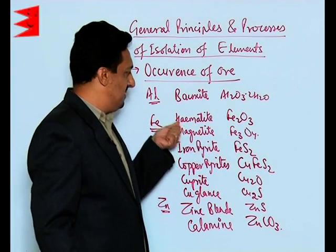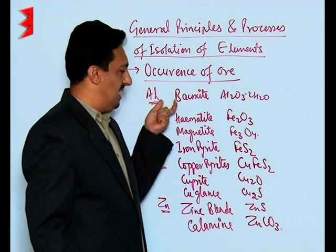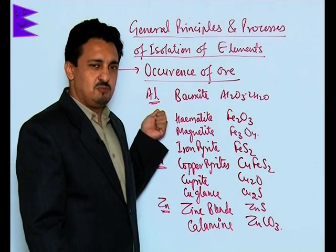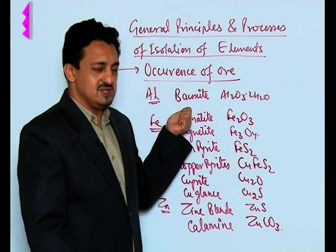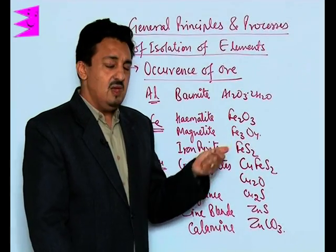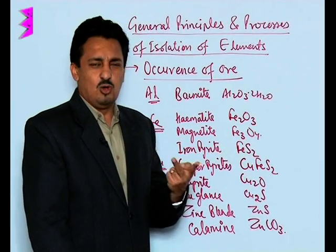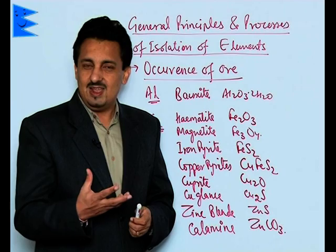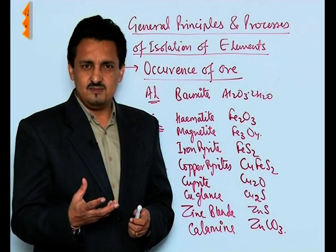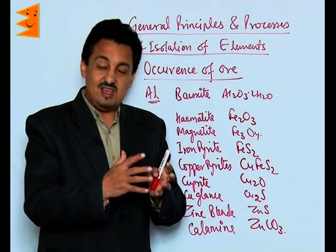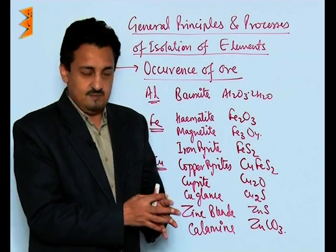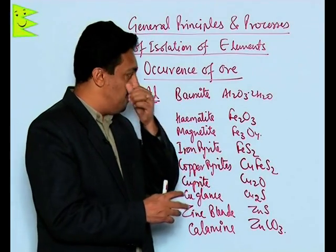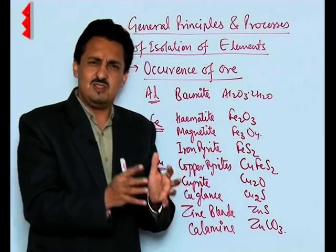On the basis of elements, there are different ores. For aluminium, the most important ore is bauxite, which is Al₂O₃·2H₂O. Another ore of aluminium is cryolite, Na₃AlF₆, which is a halide ore of aluminium, whereas bauxite is the oxide ore of aluminium.